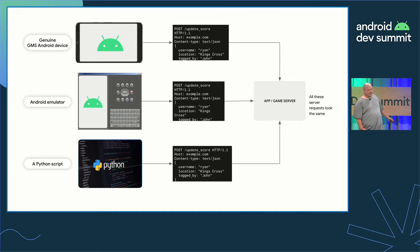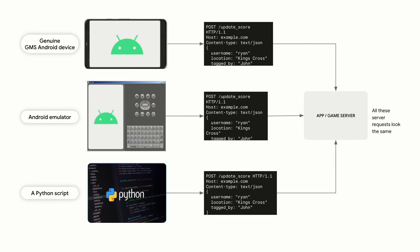In this chart, it shows that while the back end is seeing a request that looks the same, it's actually run from all three: a genuine GMS Android device, an Android emulator, and even a Python script. When you form an API request, it all comes to the app or game server looking identical. While this might seem okay, this could allow nefarious actors to access the APIs when they shouldn't be able to.